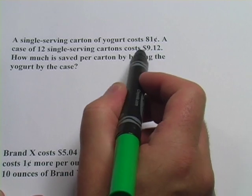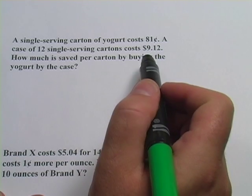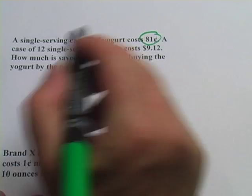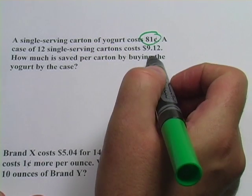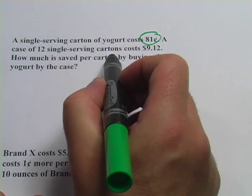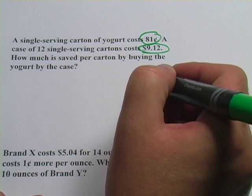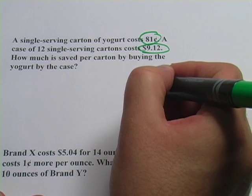What we want to do is figure out the unit cost of each, whether you buy it singly or whether you buy it in the case. The unit cost of the first one is already figured out. It's a single serving carton is $0.81. The pack of 12, we need to figure that out, and we'll do that by taking this number and dividing it by 12, and then we'll get what the cost is of one of those in there.